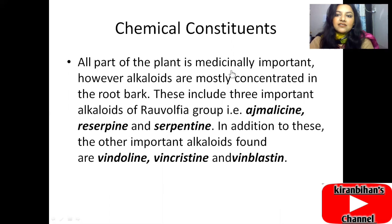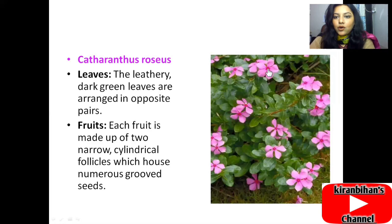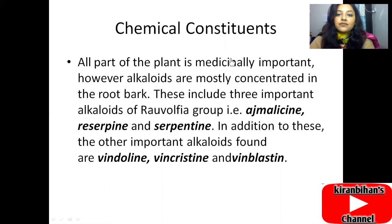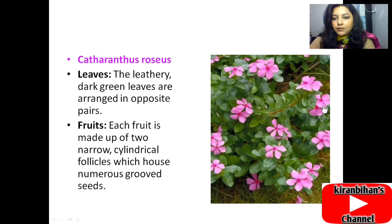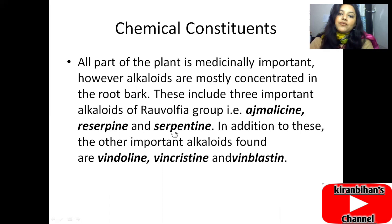All parts of the Catharanthus roseus plant are medicinally important — petals, flowers, leaves, roots, and stem. However, the alkaloids are mostly concentrated in the root bark. The chemical constituents found in the root bark include three important alkaloids of the Rauwolfia alkaloid group: ajmalicine, reserpine, and serpentine.